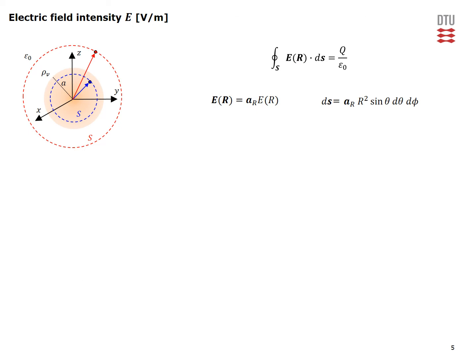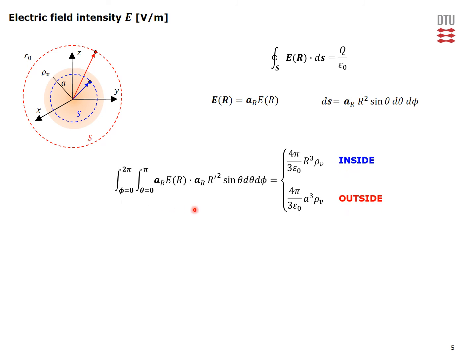We now have all the ingredients to determine the electric field intensity. We sketch the Gaussian surface inside and outside of our volume charge density, with the electric field and ds element applying for both. Plugging into Gauss's law: the left-hand side is a closed surface integral with phi from 0 to 2pi and theta from 0 to pi of the electric field dotted with the ds element. The right-hand side is the total enclosed charge normalized by free space permittivity epsilon naught.